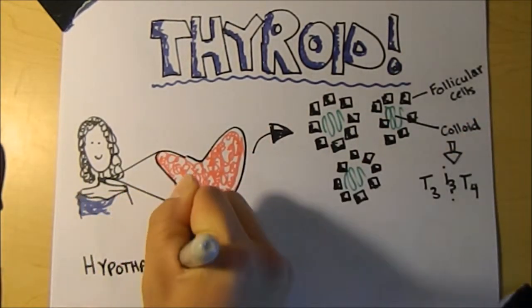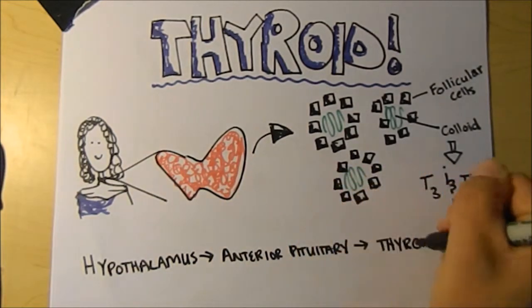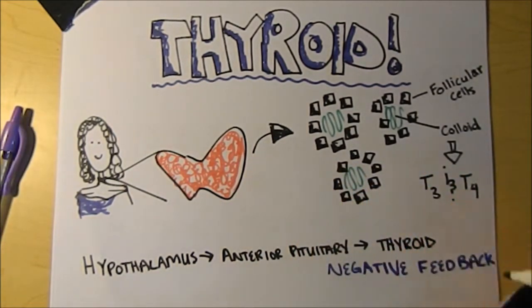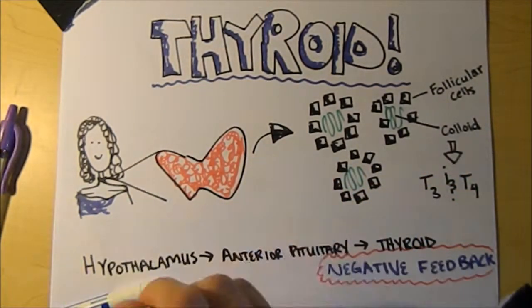Thyroid hormones are regulated by the hypothalamus to the anterior pituitary to the thyroid, and this is done by negative feedback.